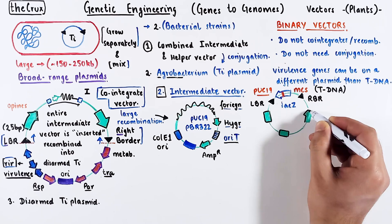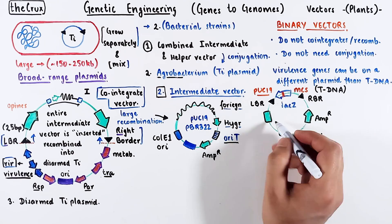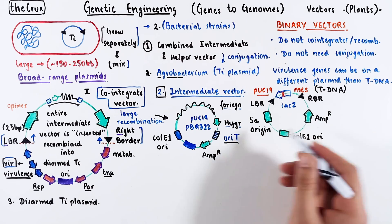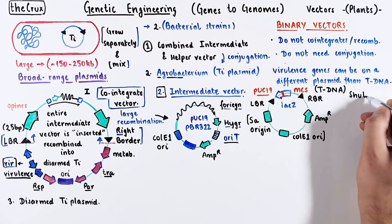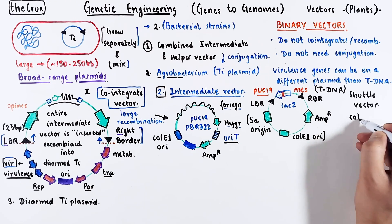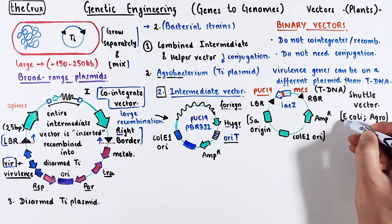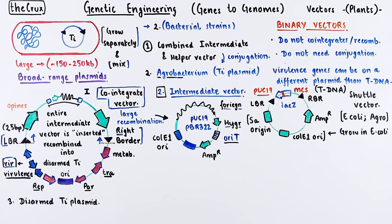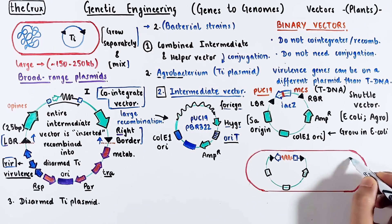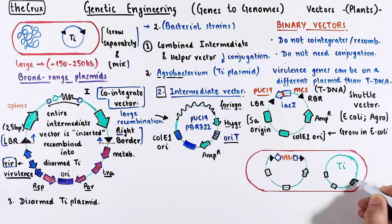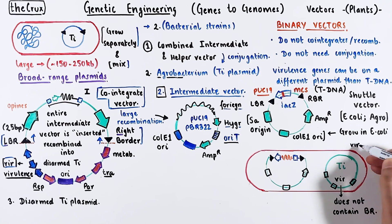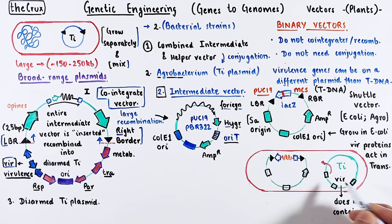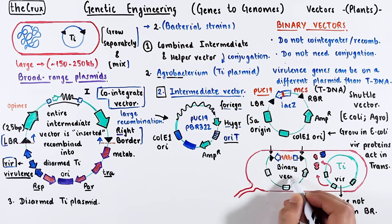The remaining vector has a selection marker, ColE1 origin, and a second origin from a broad-range plasmid called the SA origin. The SA is compatible with Agrobacterium and ColE1 with E. coli. This is a shuttle vector since it can be maintained via independent replication in two different bacterial species. For ease of use, this is normally maintained in E. coli. You can insert your choice of DNA into this binary vector, then directly insert it into the Agrobacterium that contains a Ti plasmid with virulence genes — but the Ti plasmid does not contain border regions, so it is missing the T-DNA functionality. Virulence genes act in trans — T-DNA and vir genes do not need to be on the same plasmid. Vir proteins are made from this Ti plasmid that start the conjugative transfer of the T-DNA from the binary vector into the plant cell.